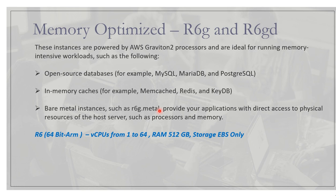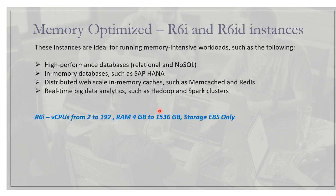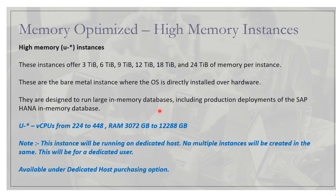The R6G and R6GD instances come with a different processor from AWS — a 64-bit ARM architecture, whereas R5 and R6A use x86. Virtual CPUs range from 1 to 64 and RAM up to 512 GB. The R6I and R6ID instances are good for real-time big data analytics such as Hadoop and Apache Spark clusters, with 2 to 192 virtual CPUs and RAM from 4 GB to 1536 GB, with EBS-only storage.